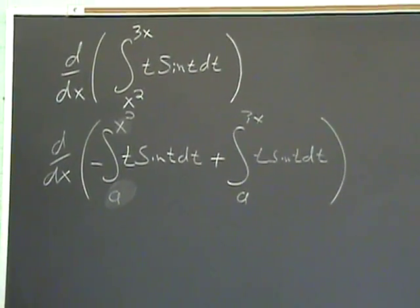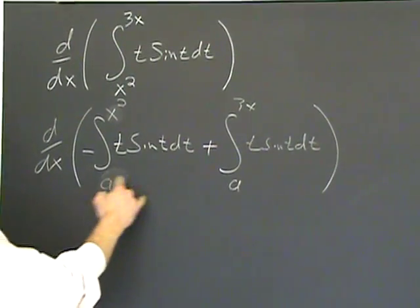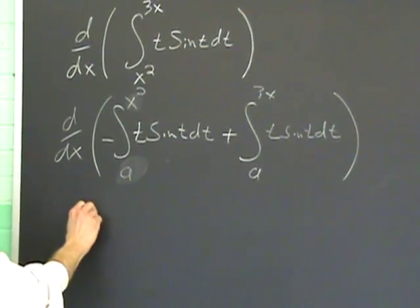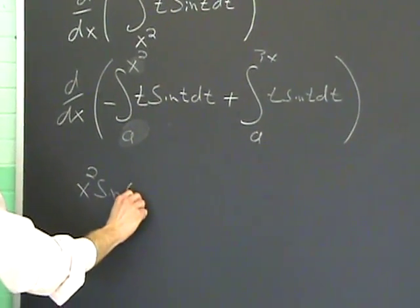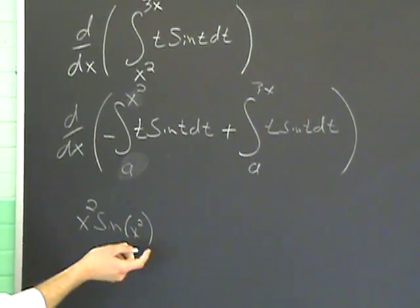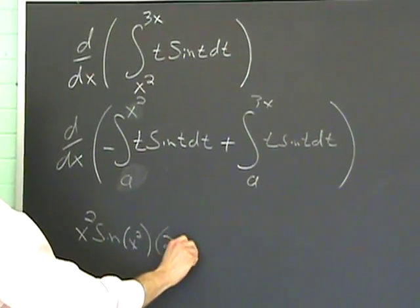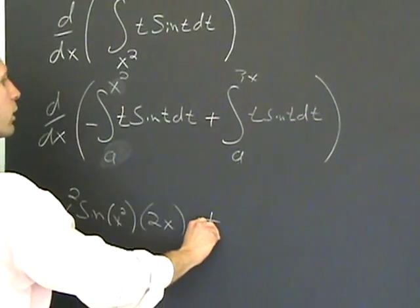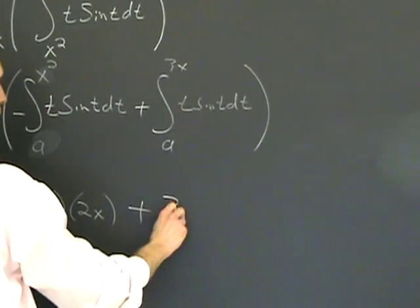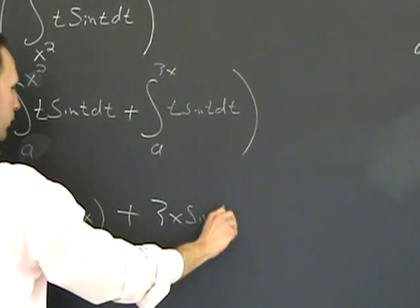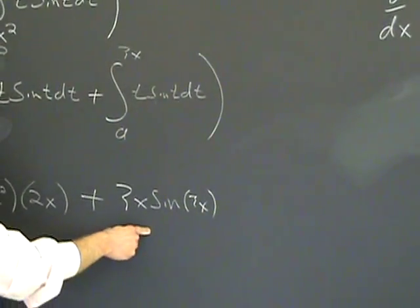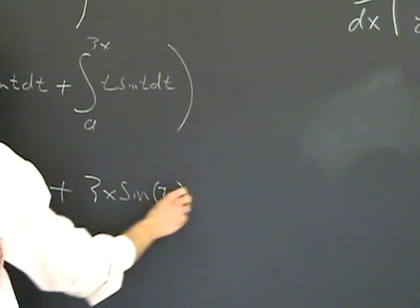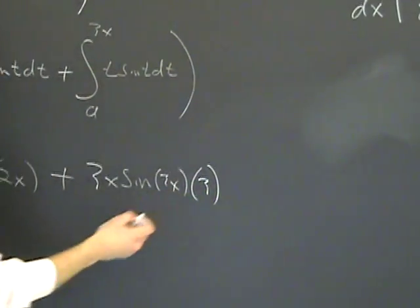Then, you can just apply the chain rule as usual. So, the derivative of this part will just be x squared sine of x squared times the derivative of that x squared, which is 2x. Don't forget, you have a negative out front. Plus, you just plug it in, 3x sine 3x, and multiply that part of it by 3. That's all there is to it.